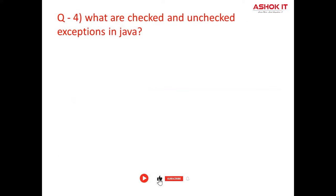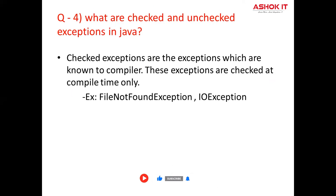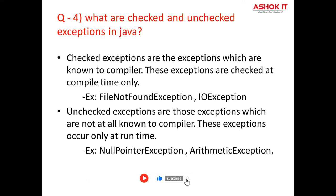Question number four: What are checked and unchecked exceptions in Java? Checked exceptions are those exceptions which are known to the compiler, and that's why they are also known as compile-time exceptions because these exceptions are checked at compile time only. Examples of checked exceptions include: FileNotFoundException, IOException, SQLException, and ClassNotFoundException. Unchecked exceptions are those which are not known to the compiler and occur only at runtime. They are also known as runtime exceptions. All subclasses of java.lang.RuntimeException and java.lang.Error are unchecked exceptions. Examples include: NullPointerException, ArithmeticException, ClassCastException, ArrayIndexOutOfBoundsException, etc.